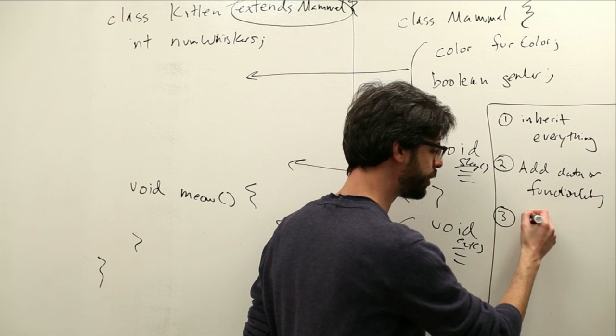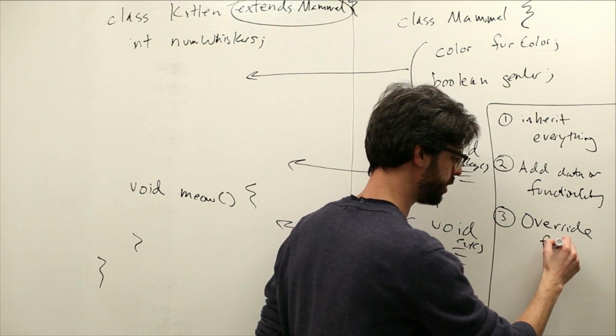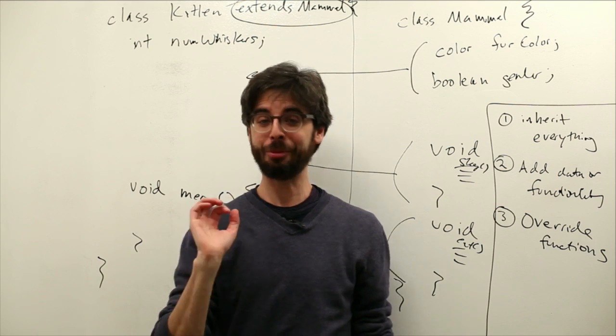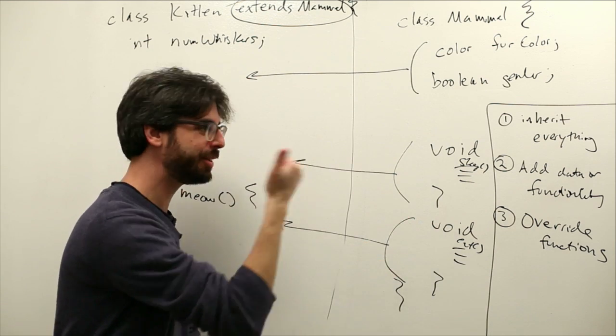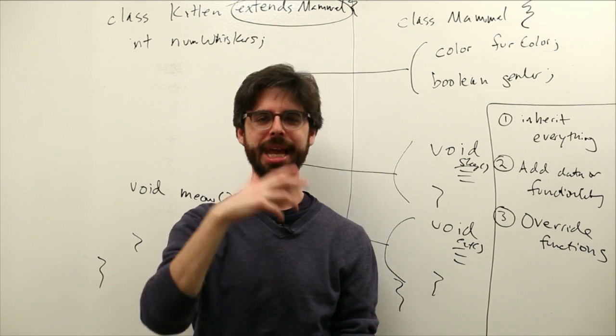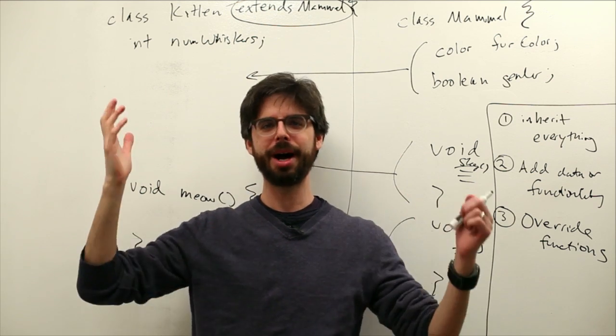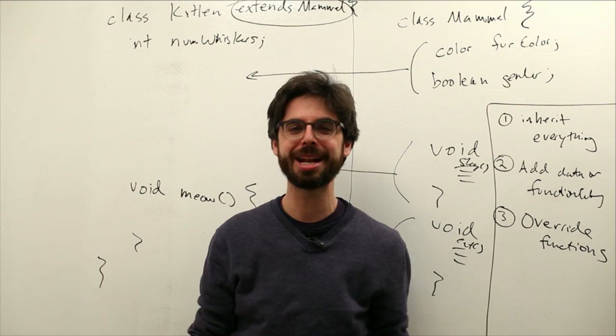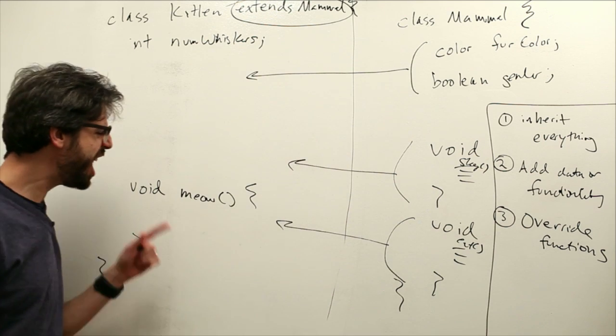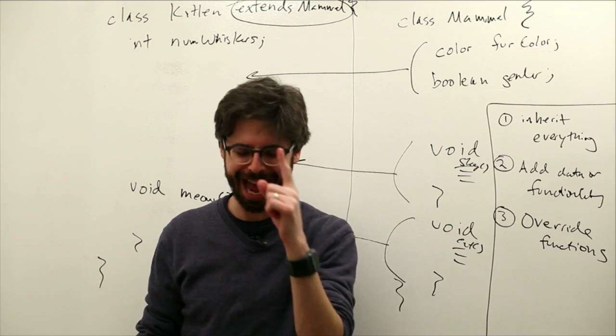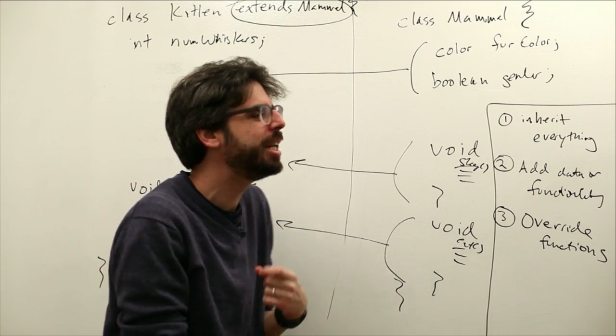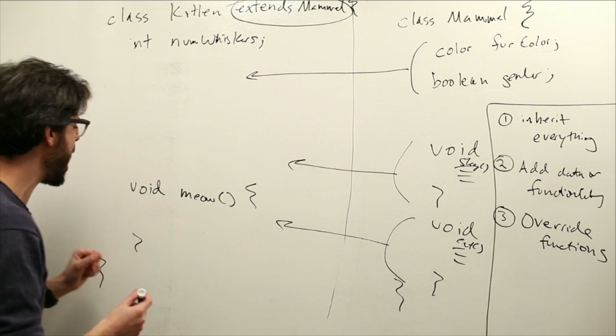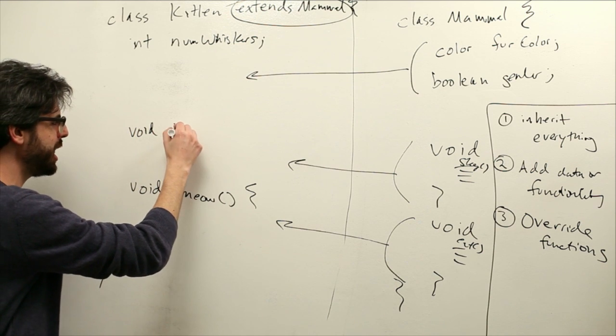The other thing we can do, which we'll use the term, is we can override functions. What do we mean by override functions? Well, it might be that our mammal class has a function called sleep. All mammals sleep. Cats and dogs and porcupines and lots of other interesting mammals. They all sleep. So, does a cat sleep? Yes, a cat does sleep. A kitten sleeps. But what if a kitten sleeps in its own special way that's different than from how its parent class sleeps.